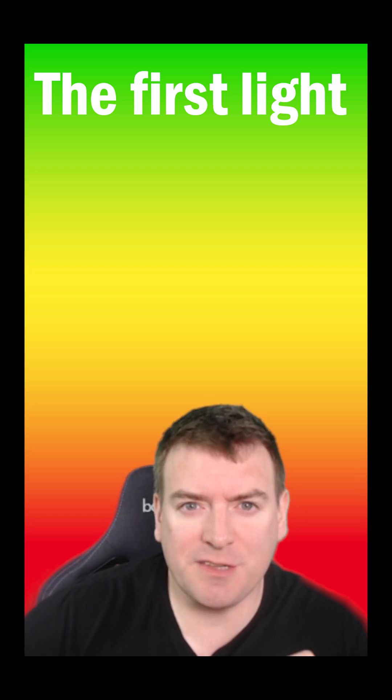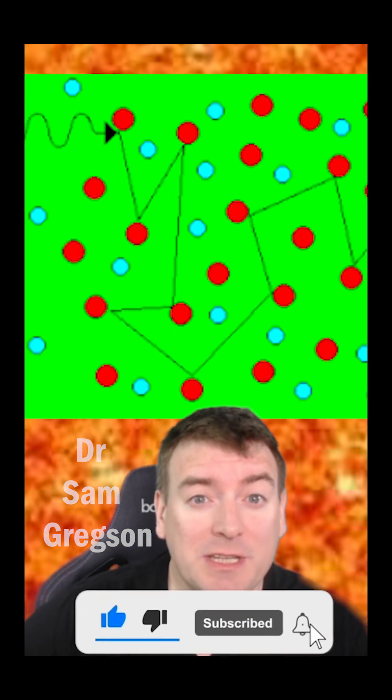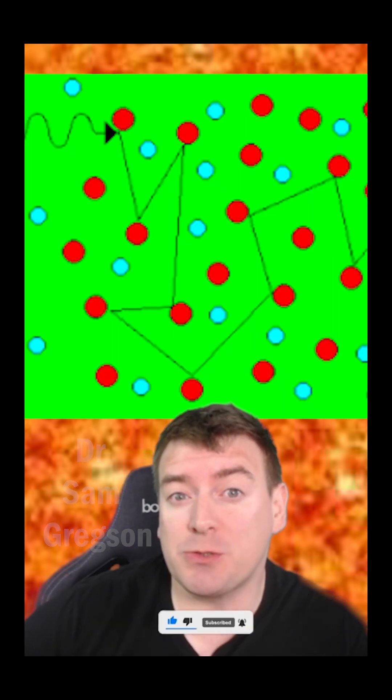What was the color of the universe's first light? Shortly after the Big Bang, the universe was a hot, dense plasma. Free electrons continuously scattered photons, and the universe was opaque.